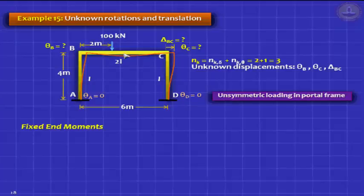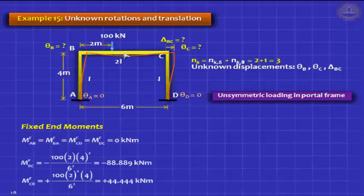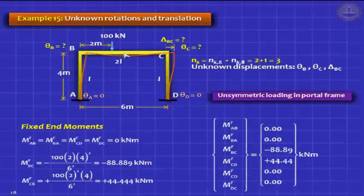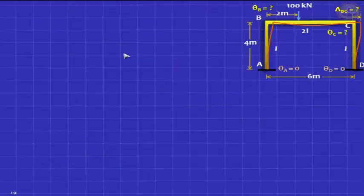What do you need to do? First, find the fixed-end moments. A, B and C, D have no fixed-end moments, but BC does. MF BC is minus W·a·b² divided by L², and MF CB is plus W·a²·b divided by L². Expand that and you have your fixed-end moments.